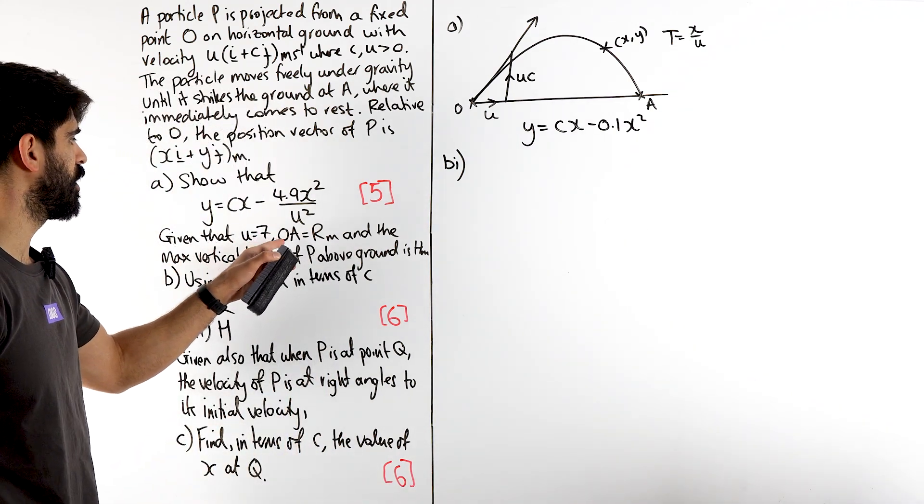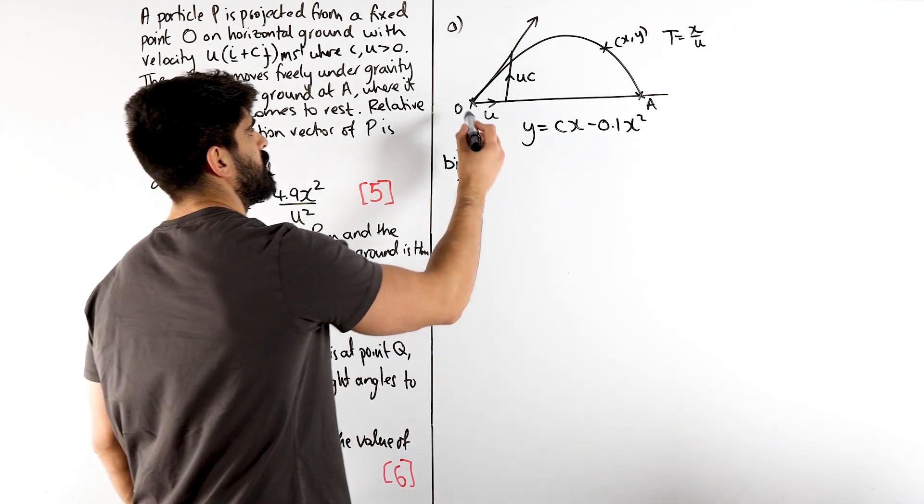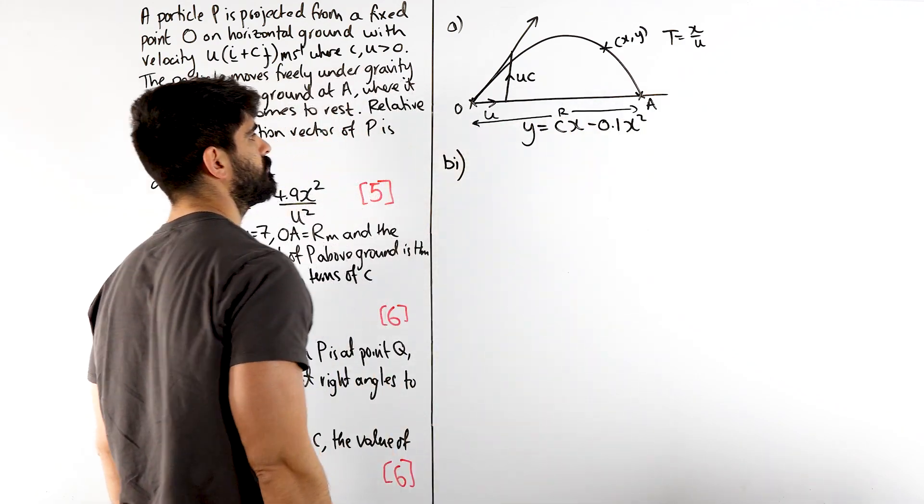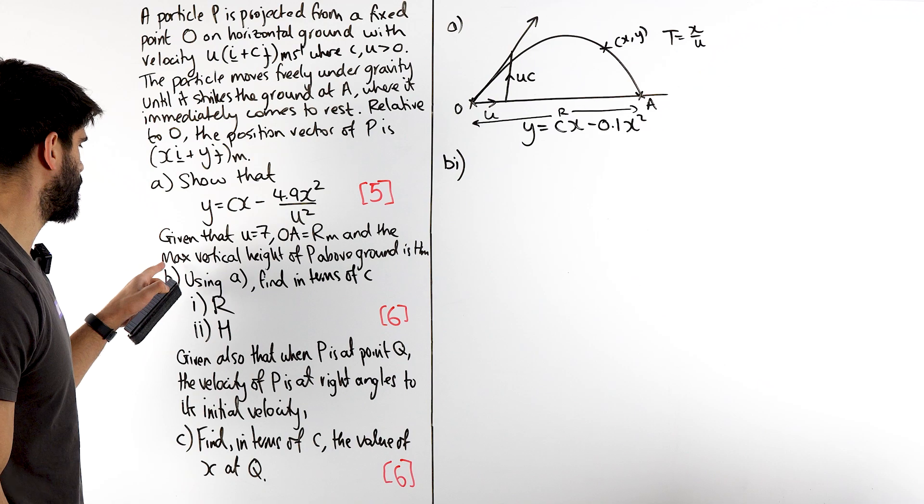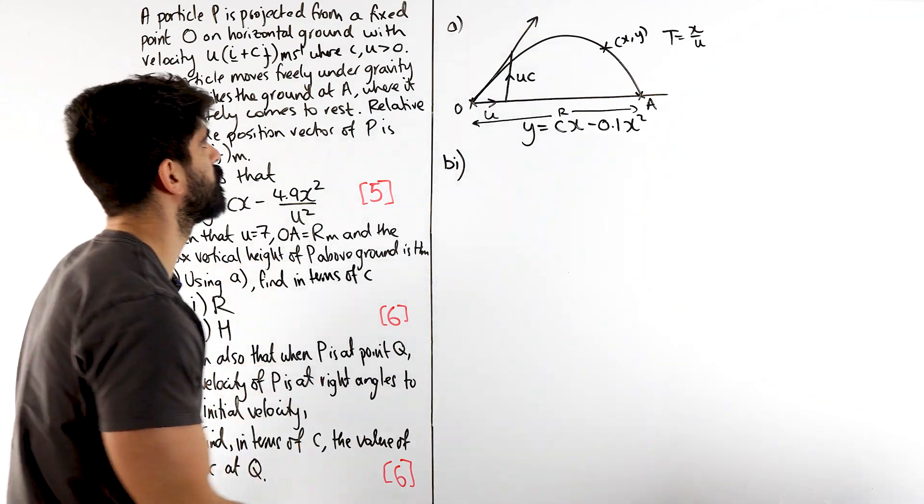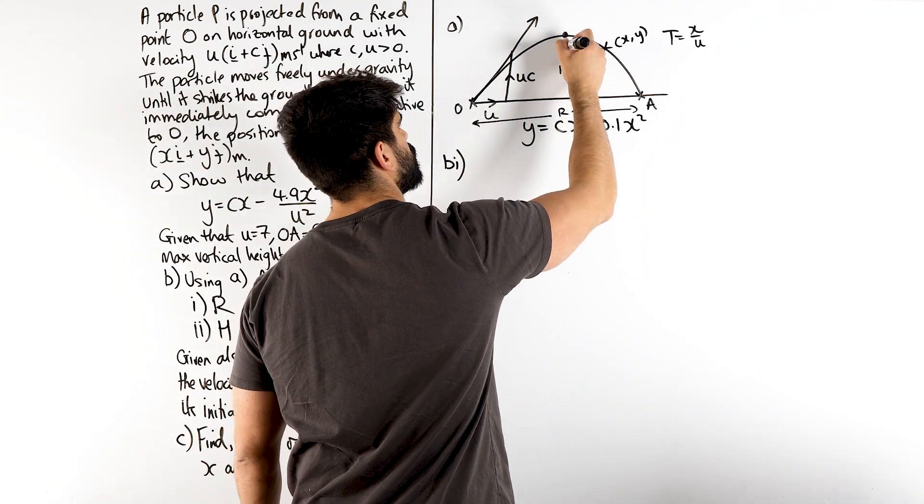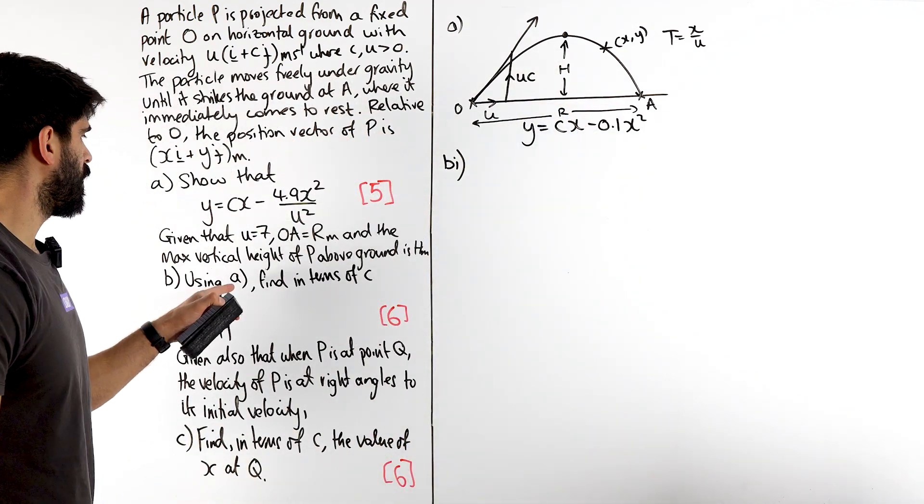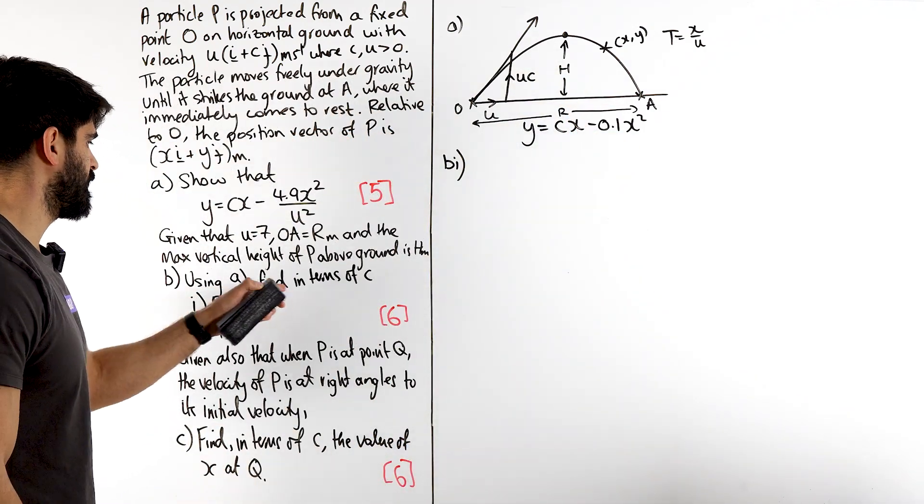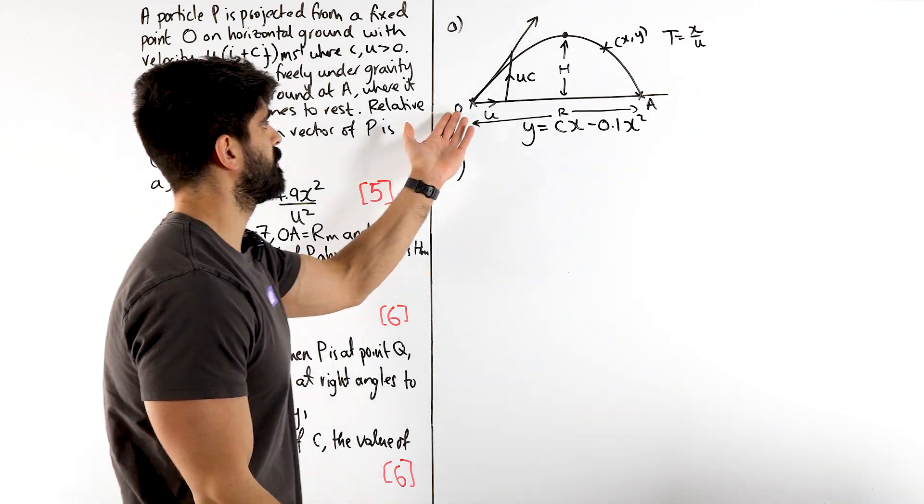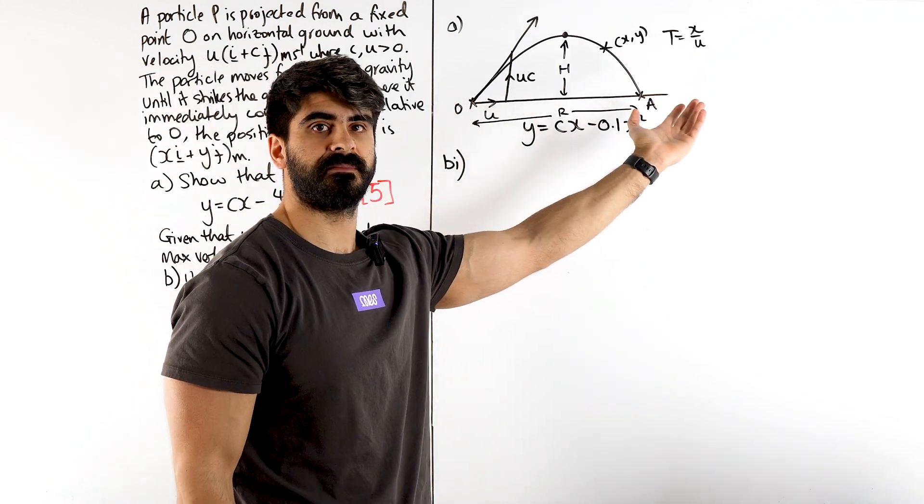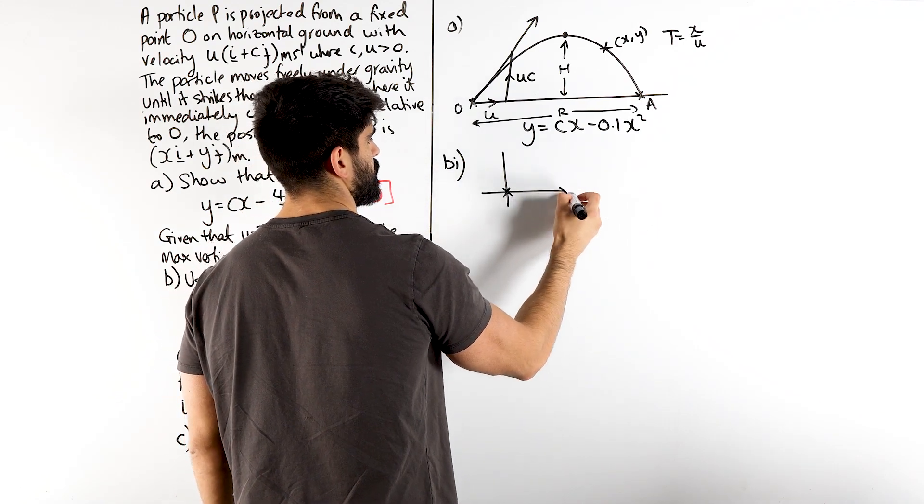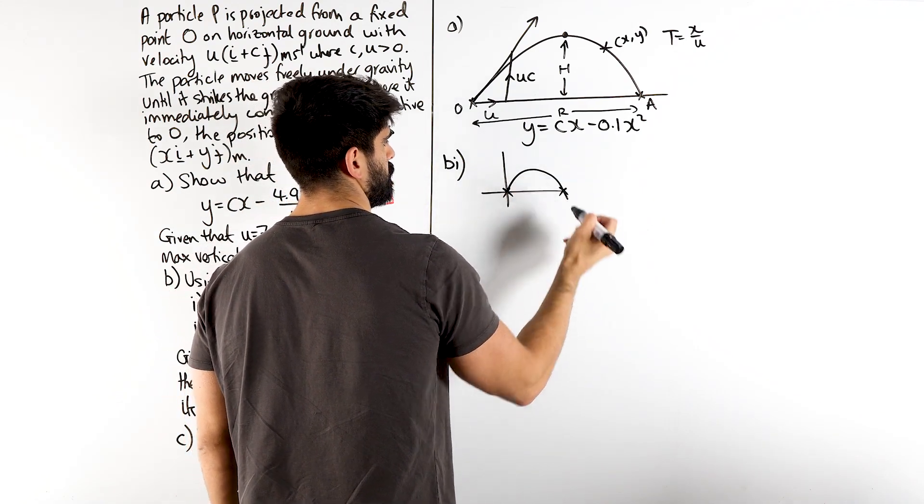So, U is 7. OA is R. So, this horizontal distance here is R. And the maximum vertical height of P above the ground is H. So, here we have H. Using part A, so using the quadratic, find in terms of C the value of R. Alright, that's easy. Because guys, remember, this is just showing us a quadratic, right? You basically have this. Yeah, that's your quadratic.